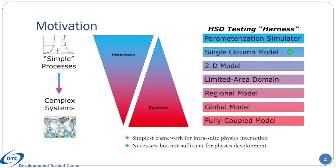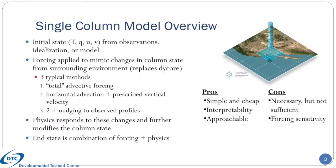The second motivation had to do with the CCPP, which contains a repository to hold compliant physics schemes, and a repository for the software framework to connect those schemes with a host model. The CCPP requires a host model to do much of anything useful, and this single-column model provides the simplest example of one.